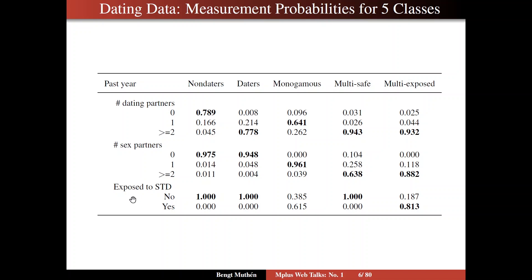The row sections here correspond to the three observed items, and the interpretation of the latent classes is obtained by looking at the pattern of probabilities. So for instance, non-daters are characterized by having a high probability for having zero dating partners, and no probabilities for the other two alternatives. Number of sex partners, zero, and exposed to STD or not, high probability of the no category. So the high probabilities here identify this class as non-daters.